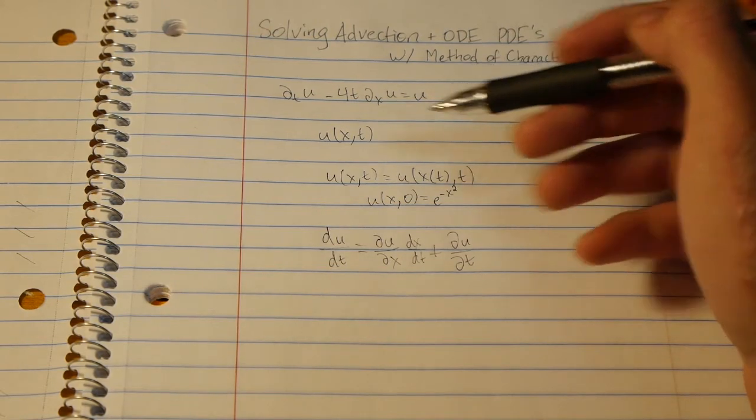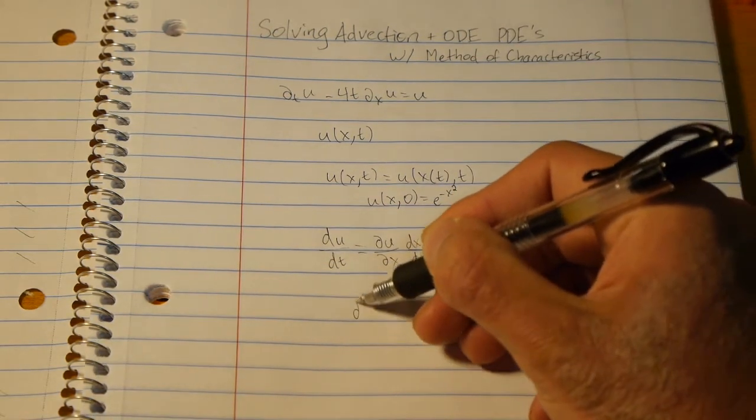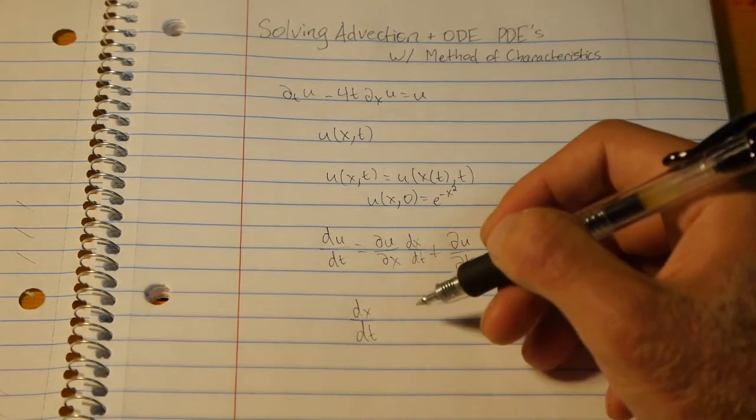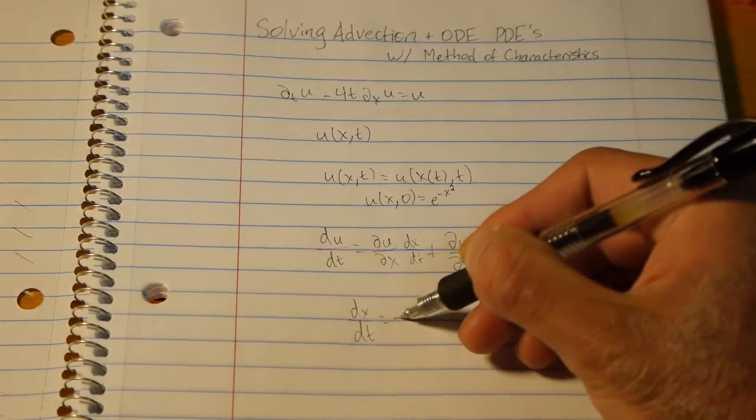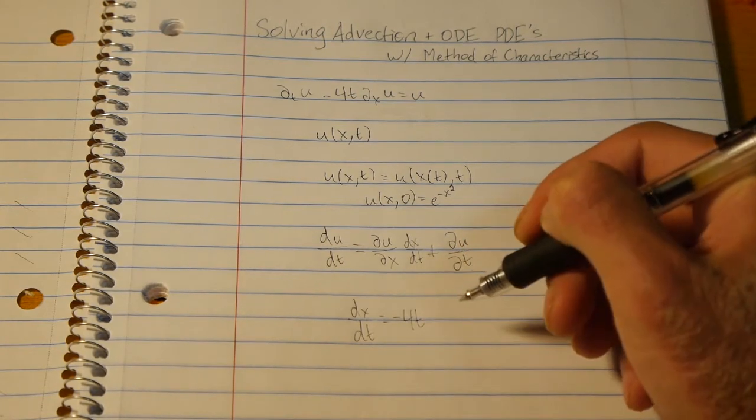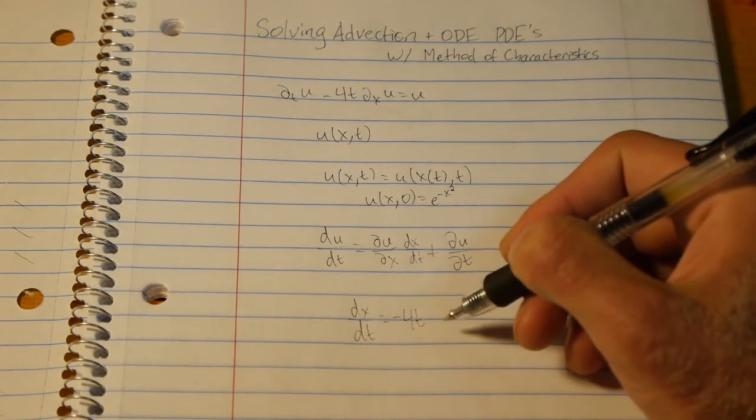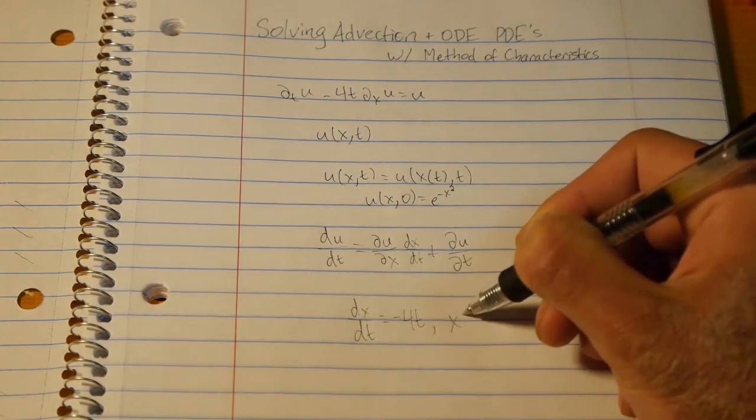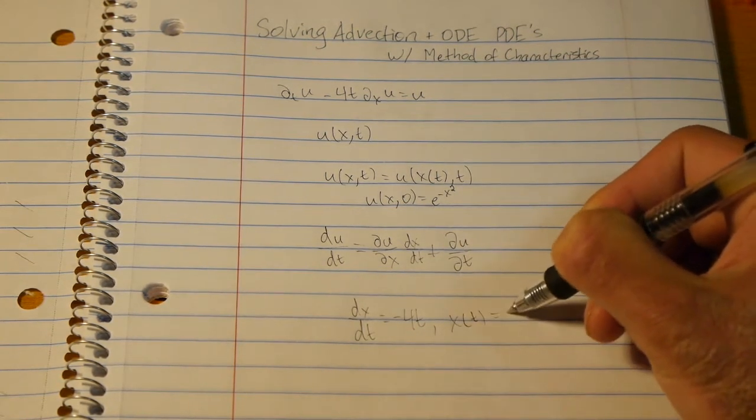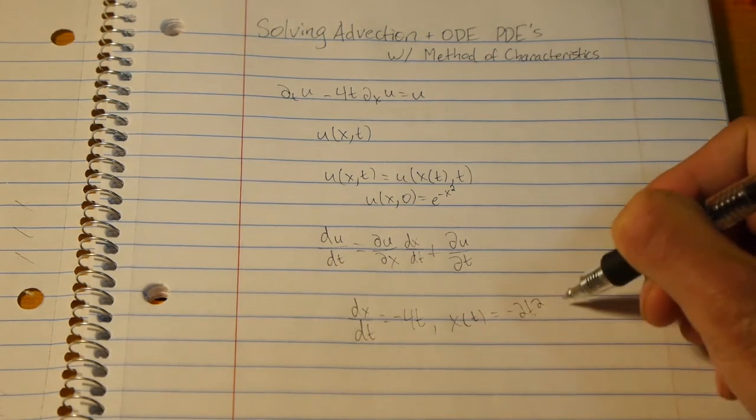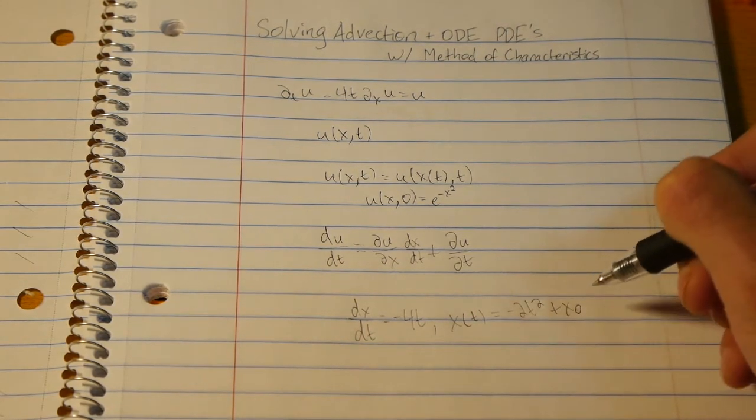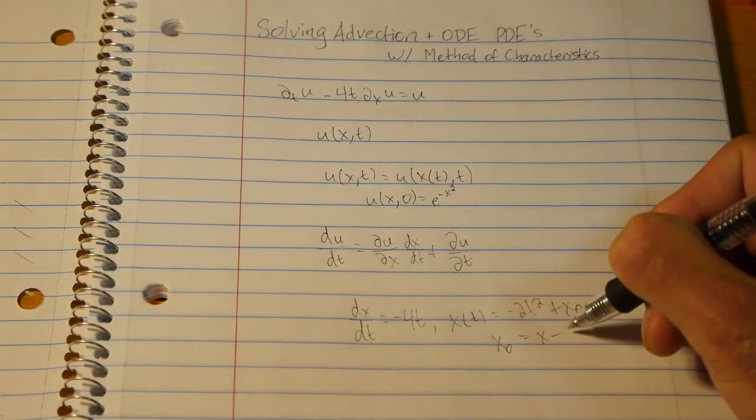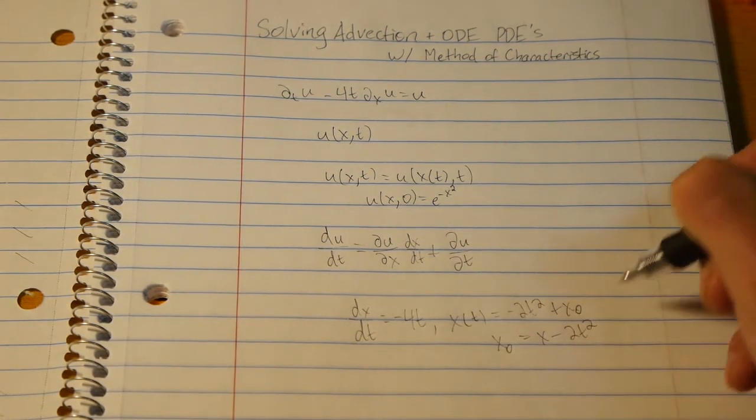So here we can just start. So we have dx/dt equals negative 4t. And the solution to this differential equation is just going to be x(t) equals negative 2t squared plus x naught. And we write that x naught equals x minus 2t squared.